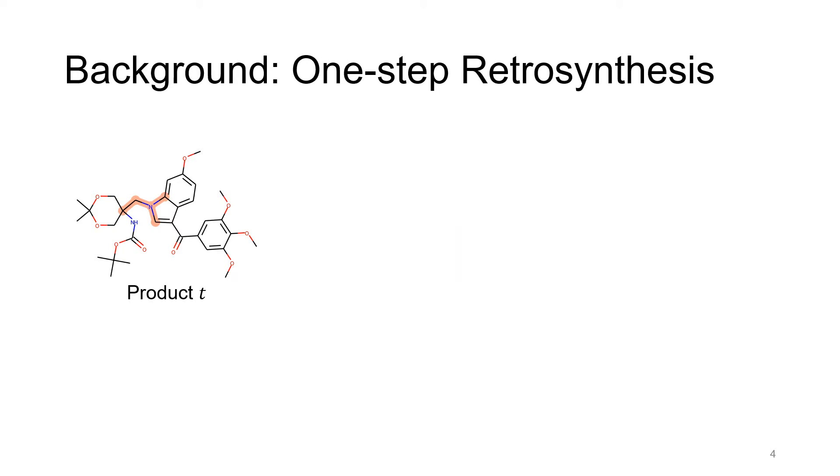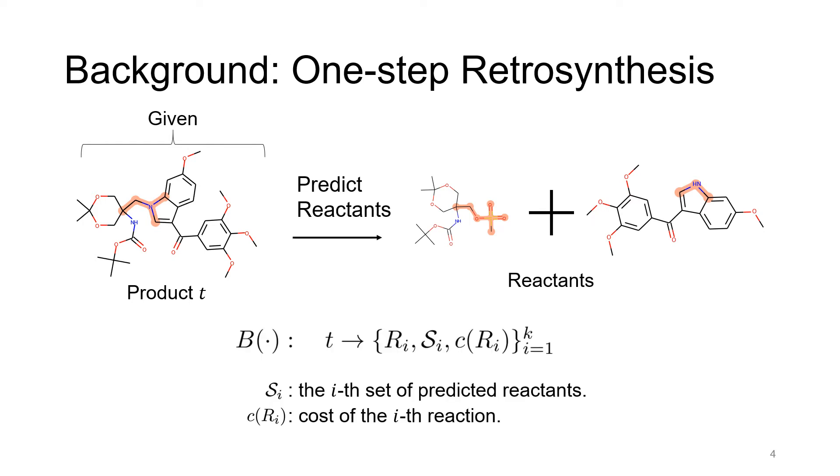One-step retrosynthesis is the reverse problem of chemical reaction prediction. Given a product molecule, the task is to predict the reactants, which are precursors for synthesizing the product. In our paper, we will assume such model is known, and we will denote it with B. This is the reverse problem, which is a mapping from the target molecule to K-candidate reactions, each with the predicted reactants and a predicted cost.